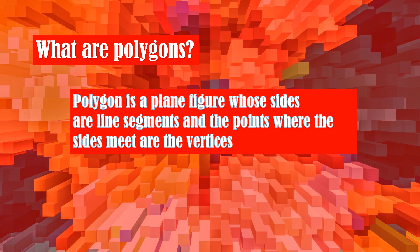Okay, let's proceed. What are polygons? A polygon is a plane figure whose sides are line segments and the points where the sides meet are called the vertices.